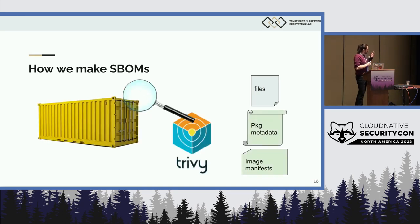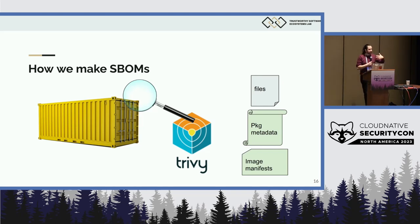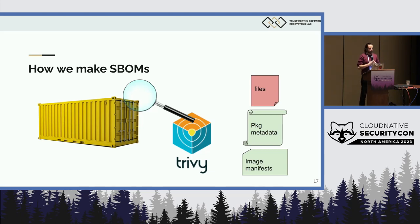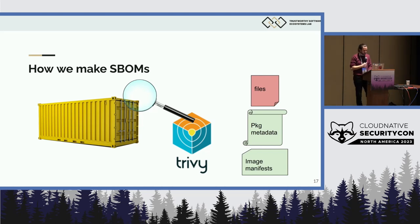We know that parsing this information gives us very trustworthy software supply chain information, because this is usually information curated by the people developing the container or the packages inside it. We also know that these files are often just very hard to understand. Files that are not being tracked by package managers, files that are not carrying provenance information, often don't tell us a lot about how this thing came to be, or how to trust this particular container.